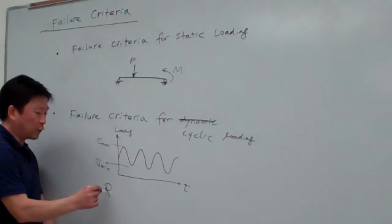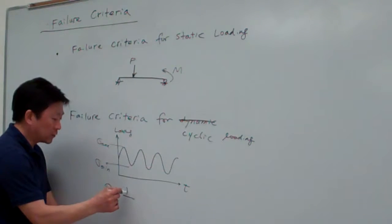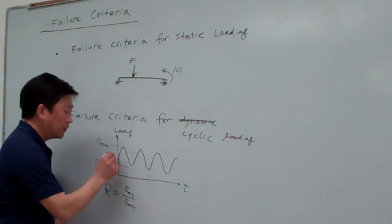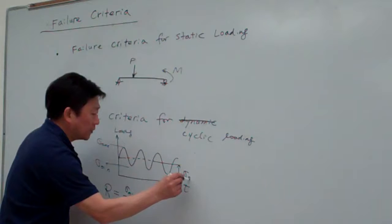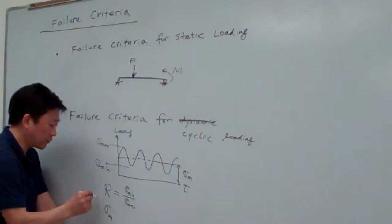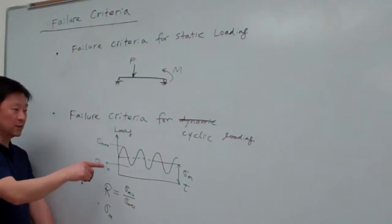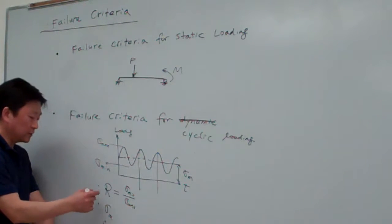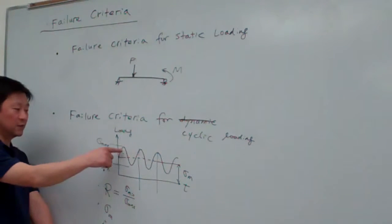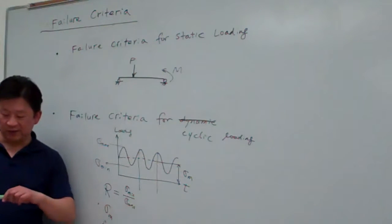Usually we categorize, we try to categorize such a curve using R. R is the ratio between the minimum and the maximum. And also in addition to the R value, this is the mean. So usually we use the two parameters to categorize, and also the frequencies. So using the frequency, those values we can define our loading type, and this kind of loading type basically will be something like this.